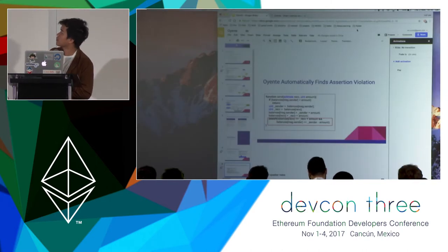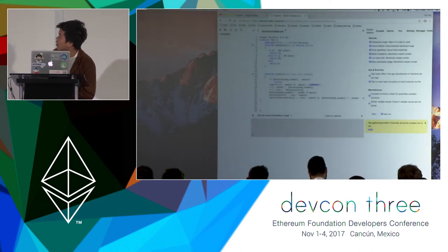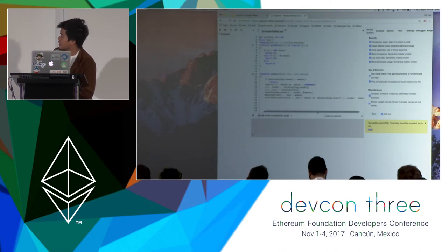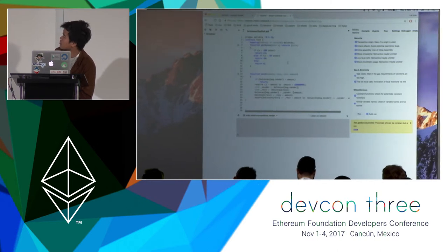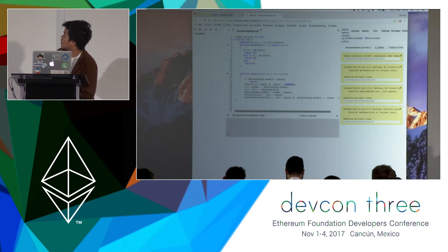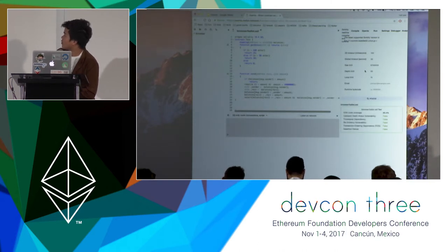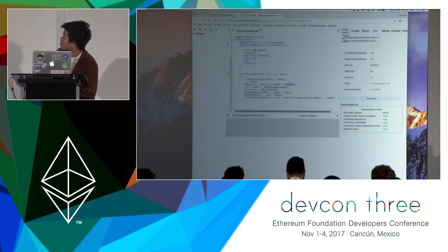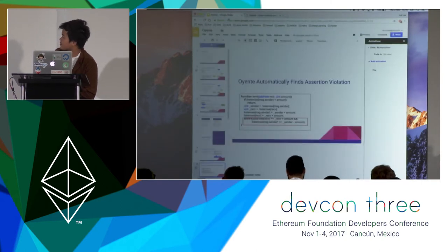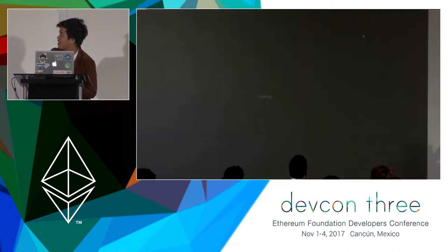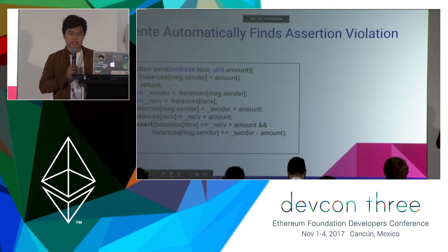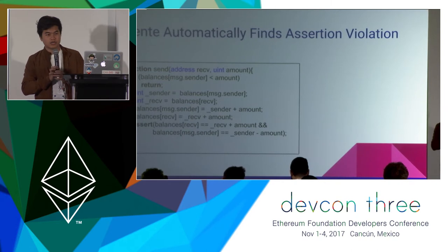I can just quickly show you the demo. This is the live version of Oriente at Oriente.Melon.network. You can just click to compile and click to Oriente and analyze. Basically, with Oriente, you can check whether some assertion is violated before you even deploy the contract to the mainnet or testnet.